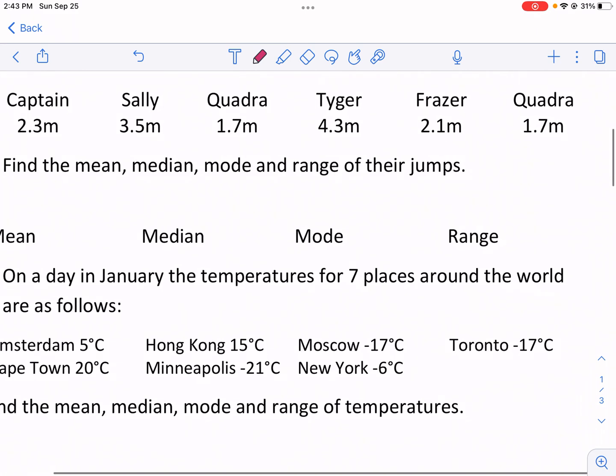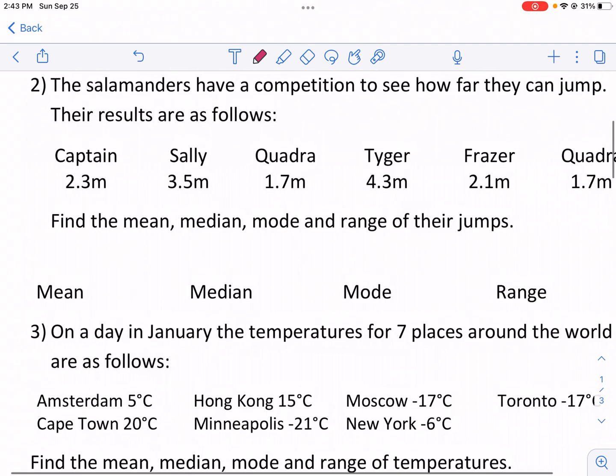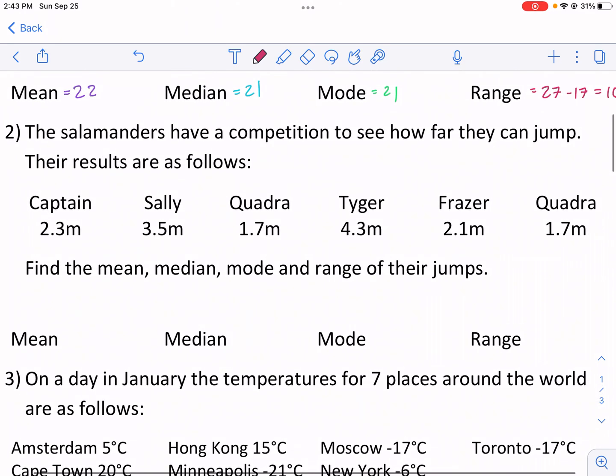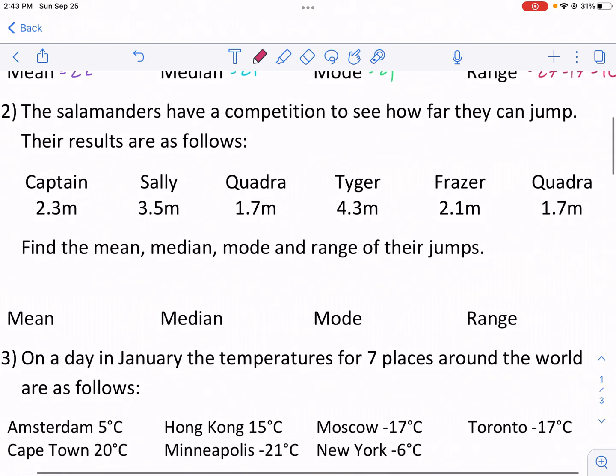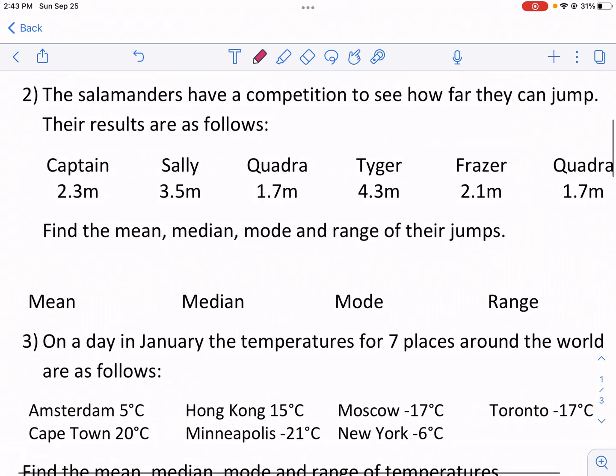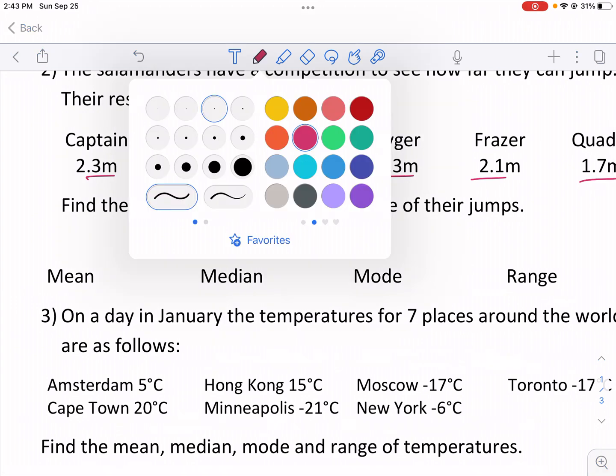That's how you find all four of those measures of central tendency. Now let's move on to number two. The salamanders have a competition to see how far they can jump. The results are as follows: Captain 2.3m, Sally 3.5m, Quadra 1.7m, Tyger 4.3m, Frazier 2.1m, and Quadra 1.7m. Find the mean, median, mode, and range of their jumps.